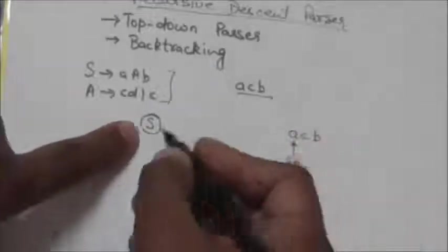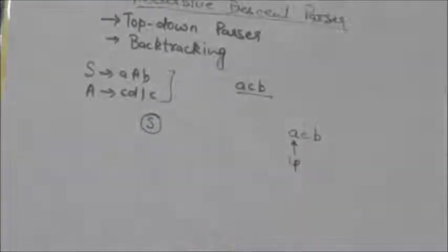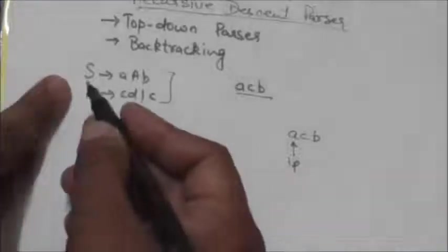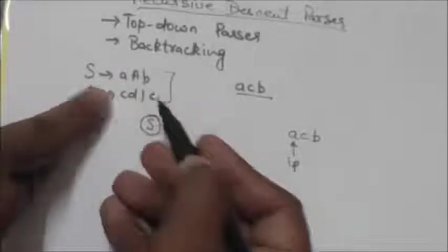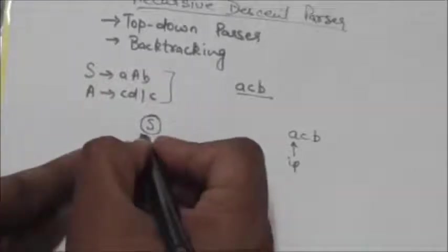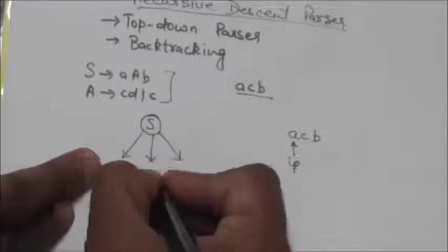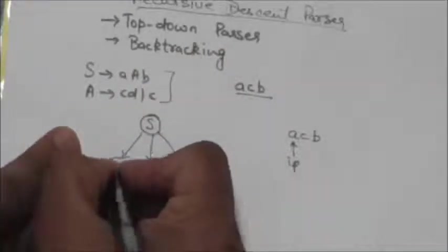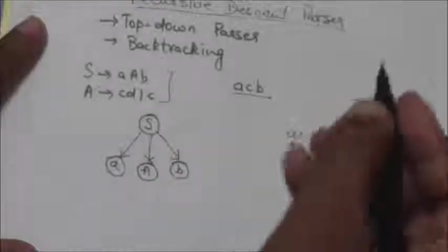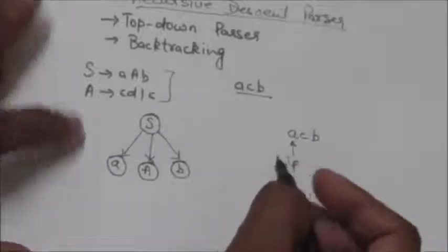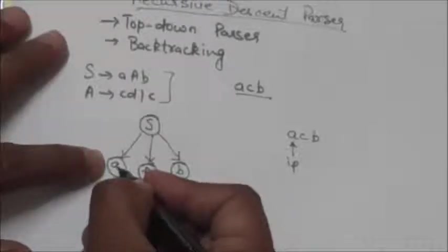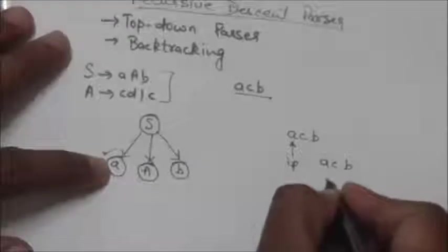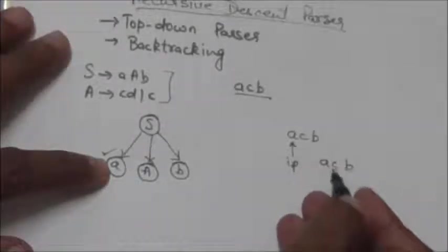There is no match since the tree has non-terminal symbol S but the input points to terminal 'a'. So we expand the parse tree using the production rule S → aAb. The symbols a, A, and b become children of node S. Now the leftmost leaf is terminal 'a', which matches the input pointer pointing to 'a', so the input pointer moves one position to the right, now pointing to 'c'.